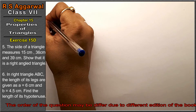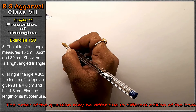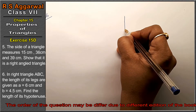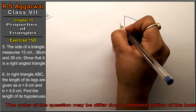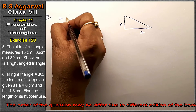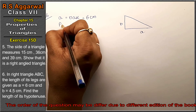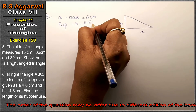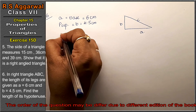Let's do question number 6 of exercise 15D, properties of triangle. Question number 6: in a right-angle triangle ABC, the length of the legs are given as A equals 6 cm. Friends, since it is a right-angle triangle, let A be the base and B be the perpendicular. So base A is given as 6 cm, and perpendicular B equals 4.5 cm. Find the length of the hypotenuse C.